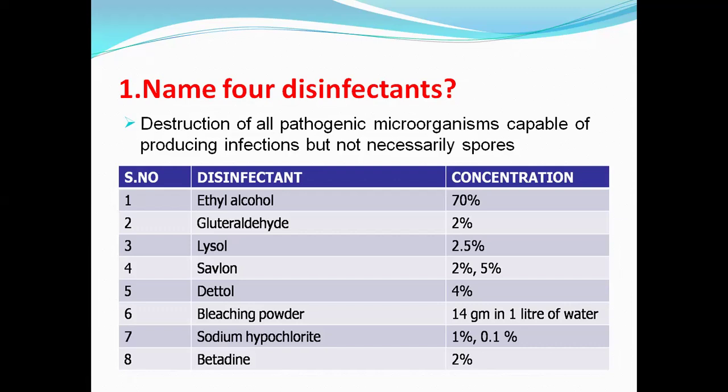Here you can see the list of disinfectants: ethyl alcohol at recommended concentration of 70%, glutaraldehyde 2%, lysol 2.5%, savlon 2.5%, dettol 4%, bleaching powder 14 grams in one liter of water, sodium hypochlorite 1% and 0.1%, betadine 2%.